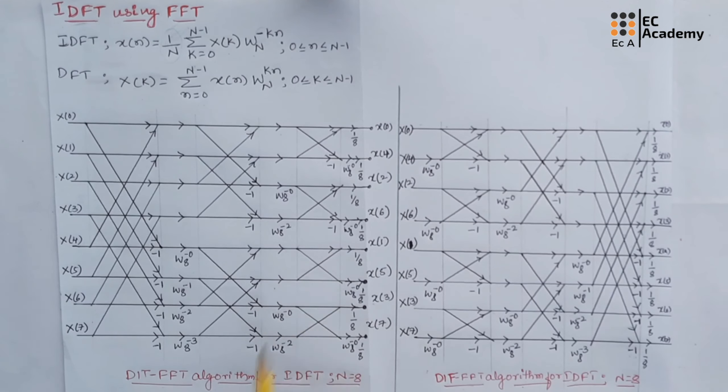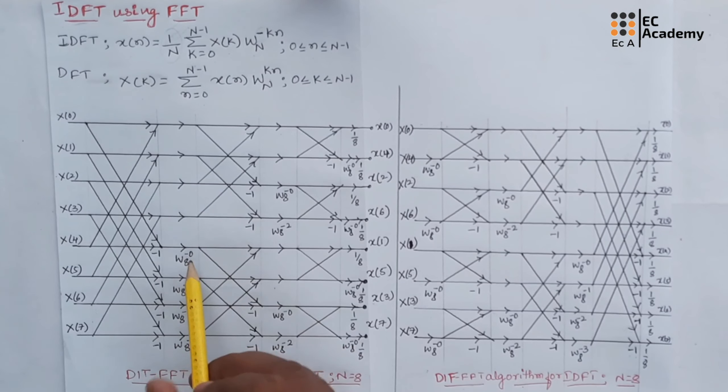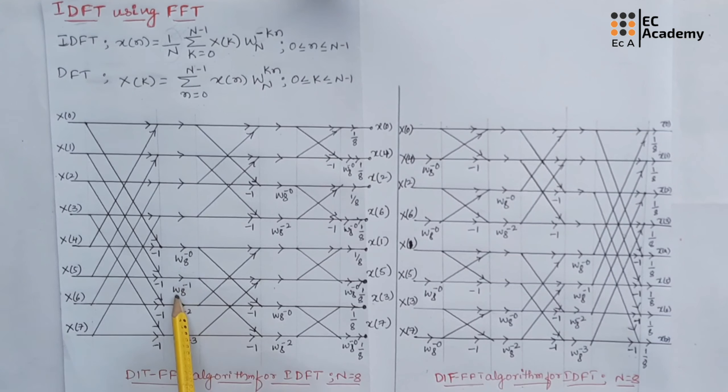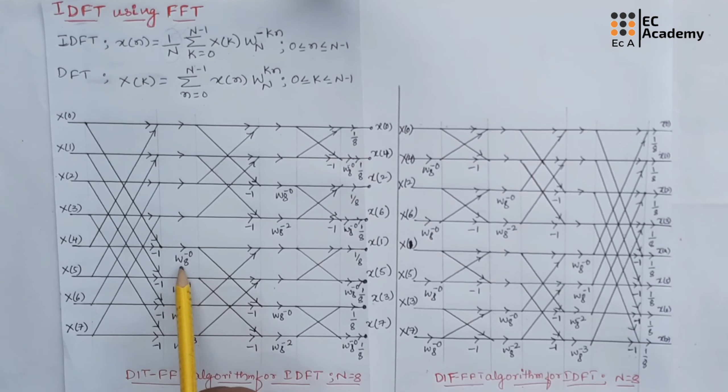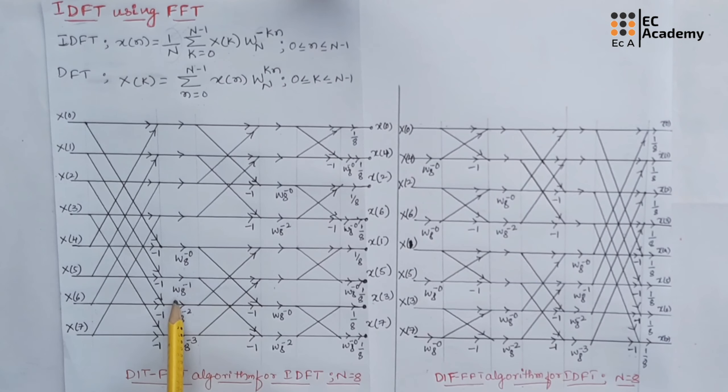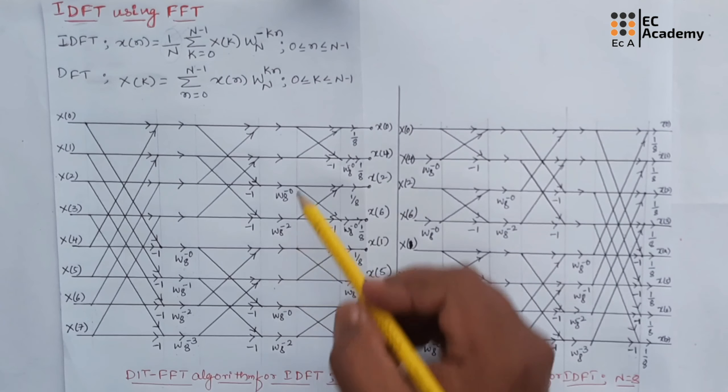The second change is we need to change the sign of power of the twiddle factor. You can see in DFT, the twiddle factor was W_8^0, W_8^1, W_8^2, and W_8^3. For this we will change the sign and it will be W_8^(-0), W_8^(-1), W_8^(-2), and W_8^(-3).